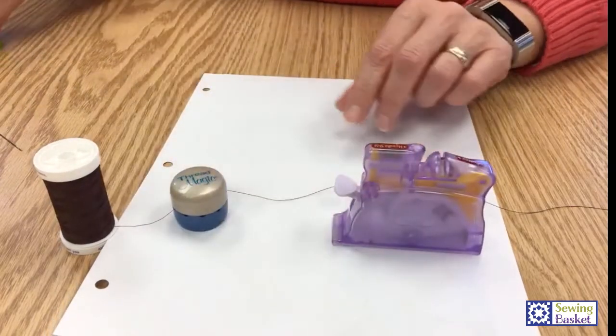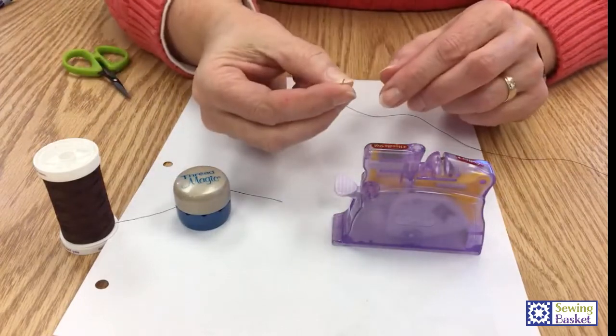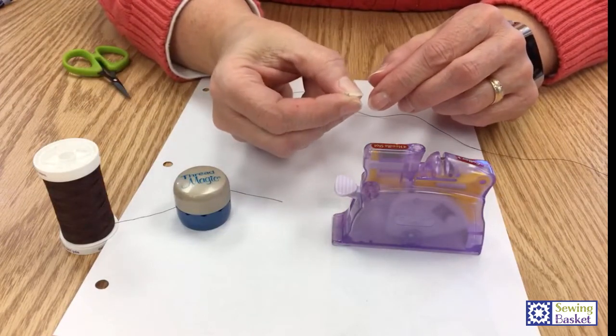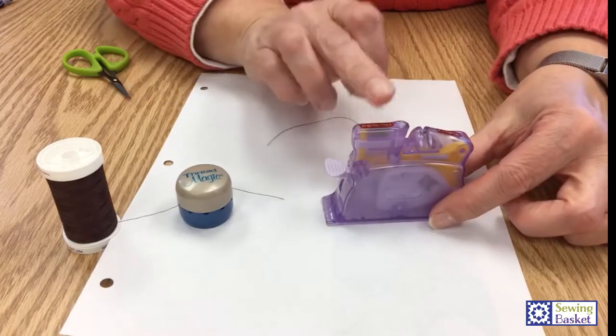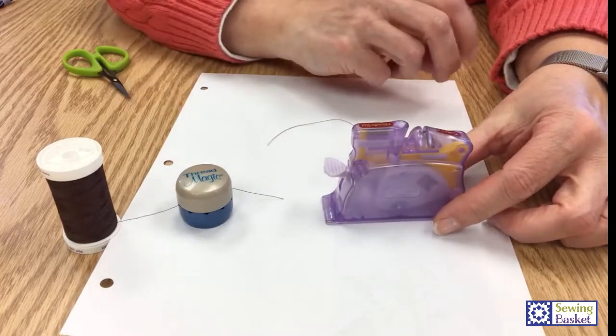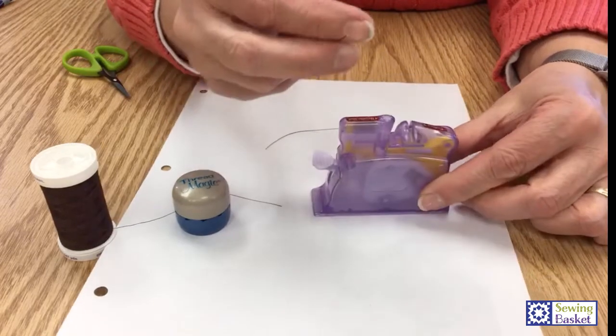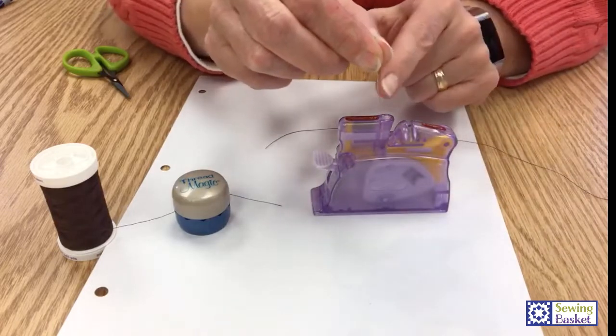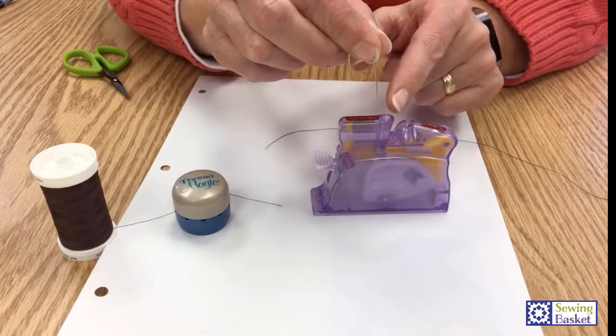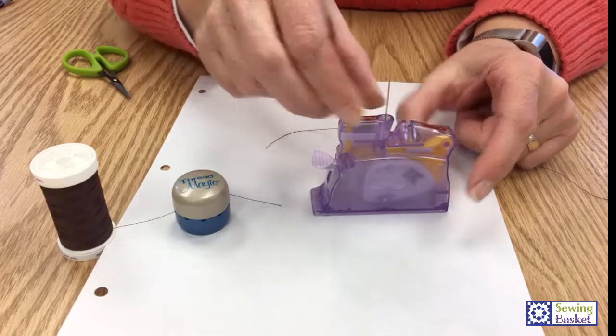And then one more product that we have to show you today: for those of us where it doesn't matter how big the eye is on the needle, we still can't see it because our eyes are getting older. This is called the Desktop Needle Threader. This one has a little hole right at the top, and I'm going to put my needle with the eye side down. I kind of want the opening of the eye facing in this direction, so I'm going to put it down in there.